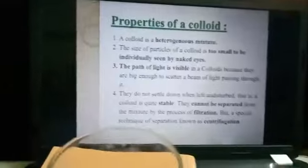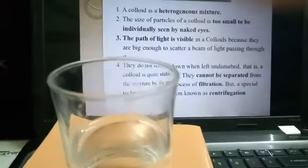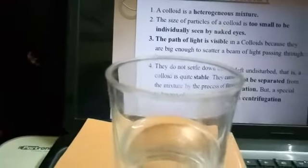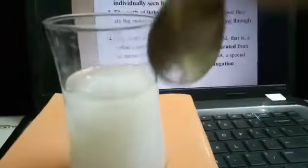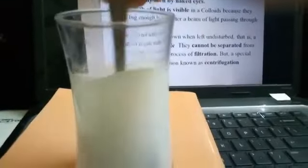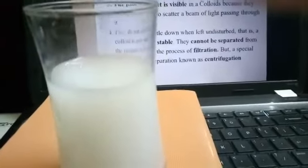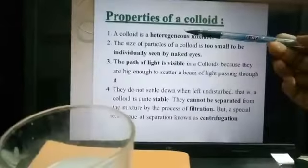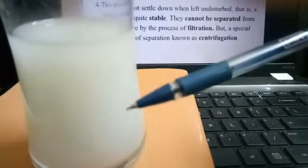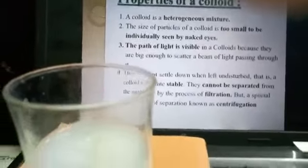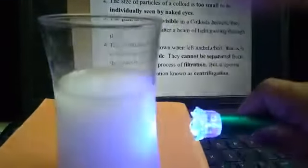Next, properties of colloid. We take another glass and add milk to it. Milk in water is a heterogeneous mixture. The particle size is too small to see with the naked eye — you are not able to see the particle size of milk. The path of light is visible in a colloidal solution. You can perform this activity at home as well.